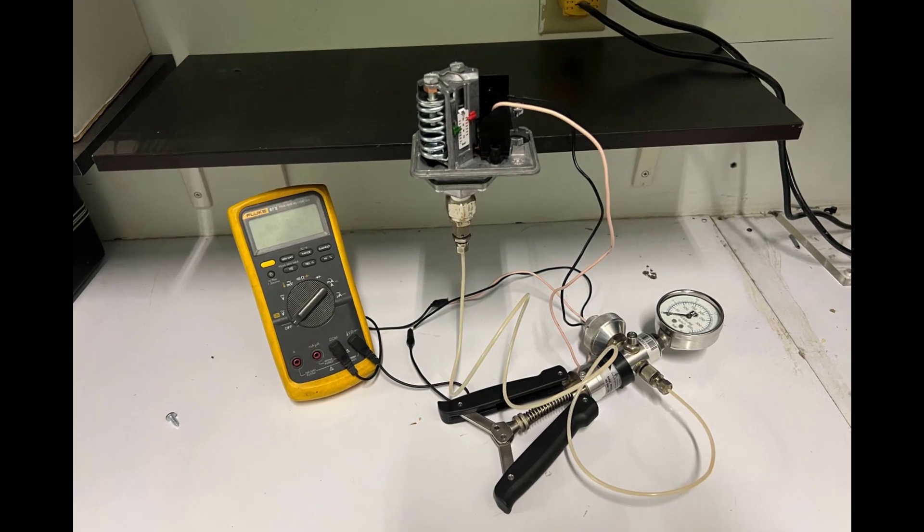Now in adjusting the cut-in-cut-out pressure set point, we will use a multimeter to test the continuity of terminal 1 and 2. If it is in close contact, we can hear an audible sound. And to apply a pressure to the sensor, we will use a hand-held pressure calibration device.